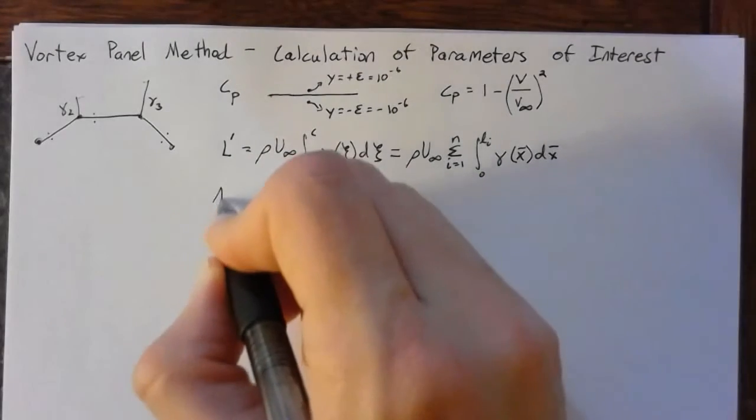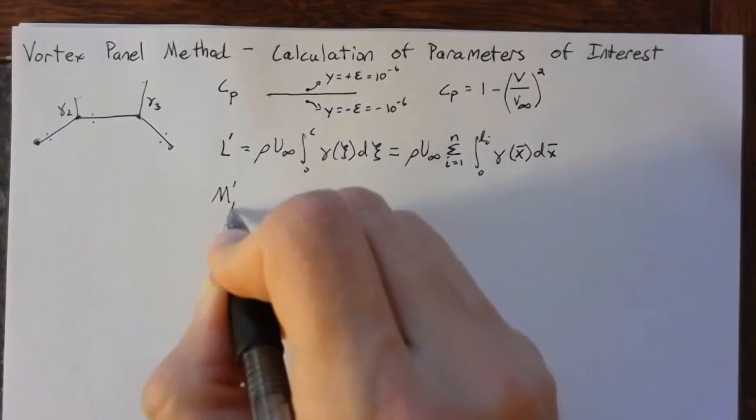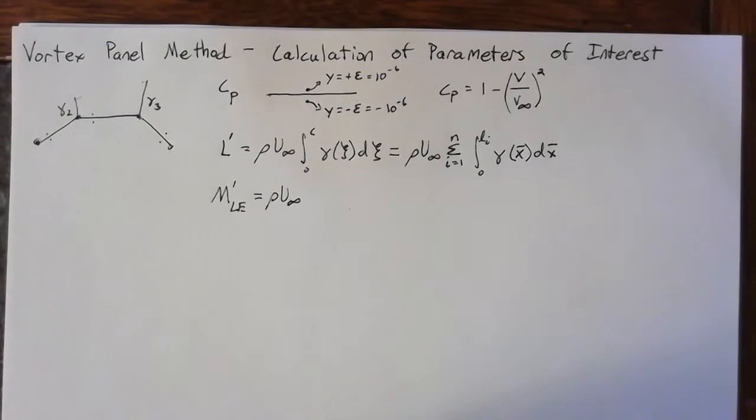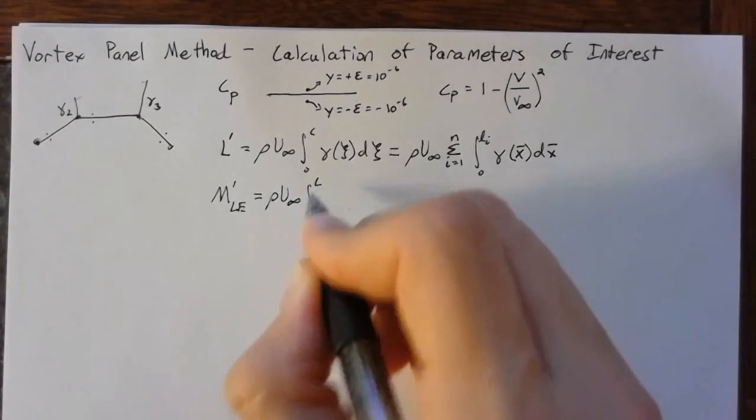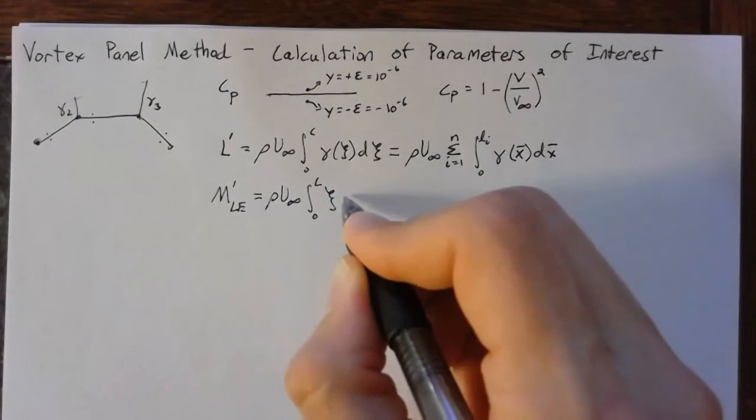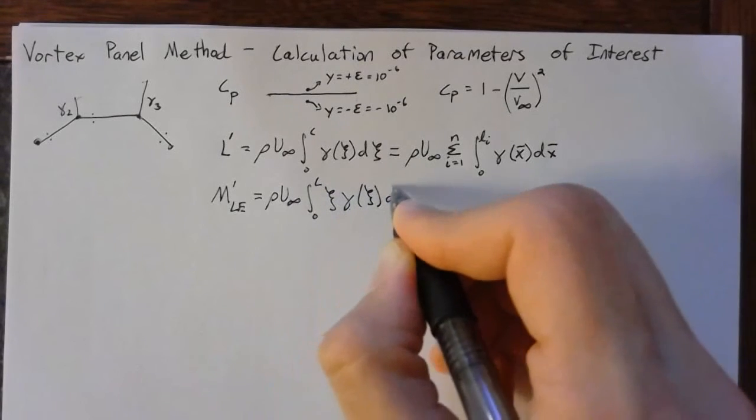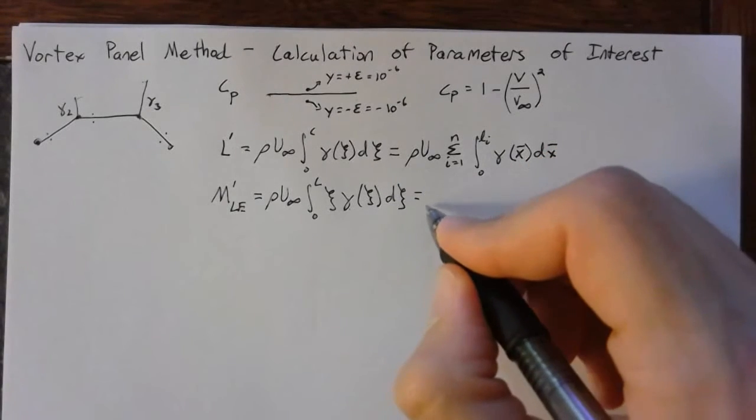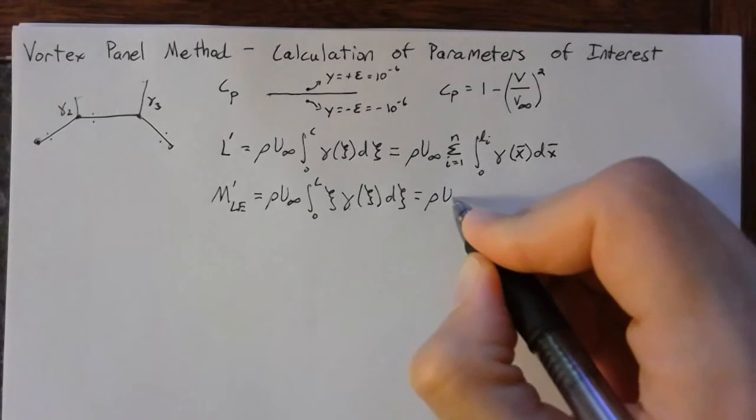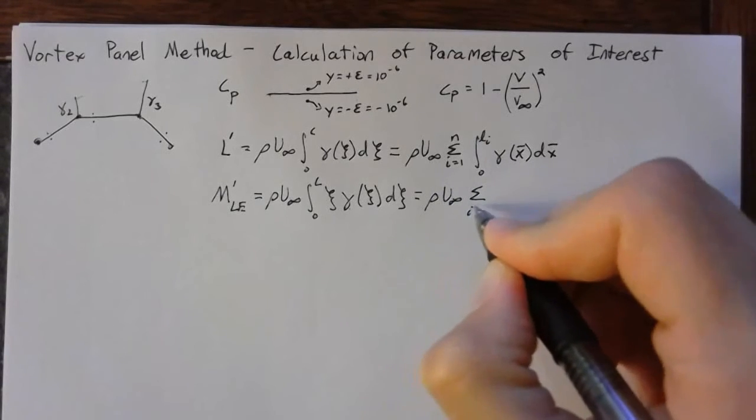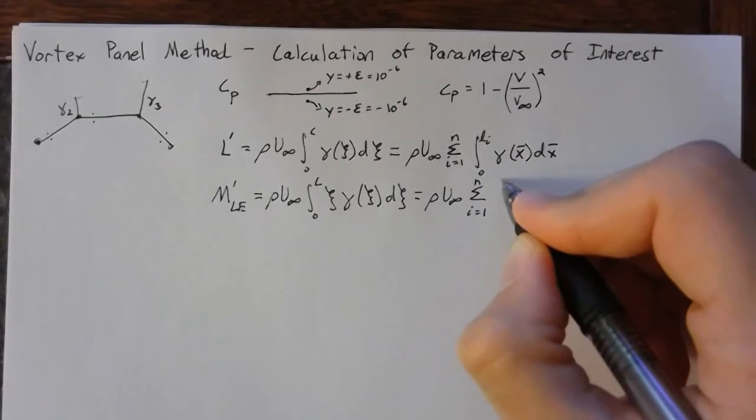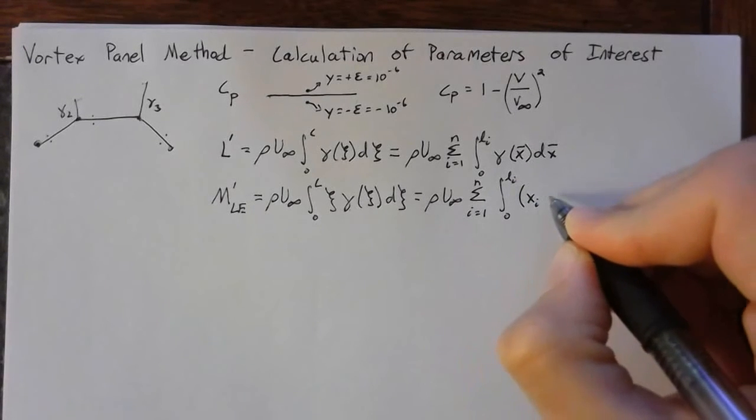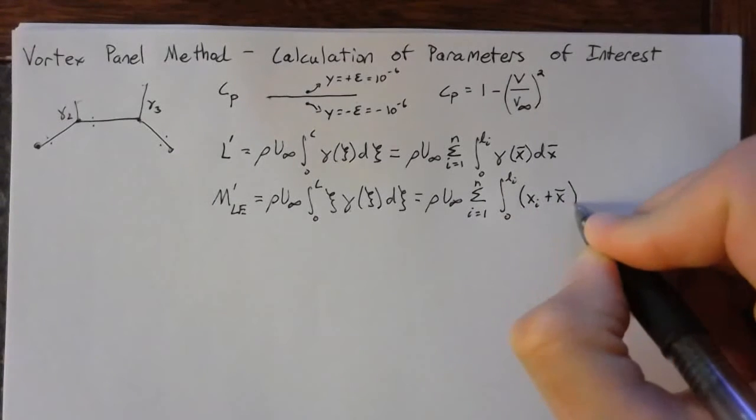And we'll do exactly the same thing for our moments. So let's go ahead and just take the moment about the leading edge. And this will be equal to rho times u infinity times the integral from 0 to C of psi times gamma of psi d psi. And once again, we're going to split this up so that it'll be rho times u infinity, and then we'll sum i is equal to 1 to n. And then we'll integrate from 0 to L sub i, and we'll have x sub i plus x bar. That'll be our psi.